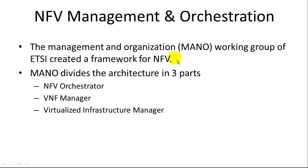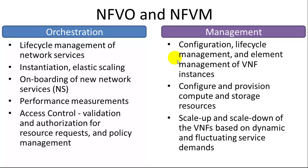There's a framework defined by ETSI for what functions have to be carried out by the management and orchestration layers. Orchestration is managing the lifecycle of network services — instantiation and elastic scaling for the network services, onboarding for new network services, and performance measurements. It needs to gather statistics on the performance of each virtualized network function, look for ones that are overworked and ones that are underworked, and make adjustments as needed. And access control: we have security, so we have to control validation and authorization for all the network resources. The management module is going to manage the configuration, lifecycle management, and element management for the virtualized network function instances.